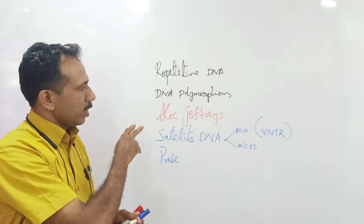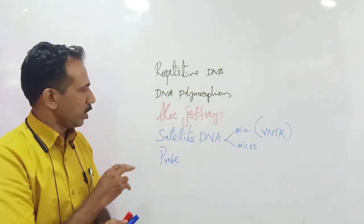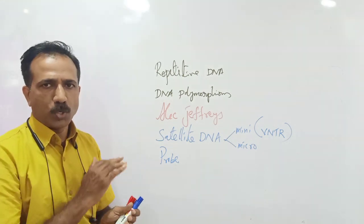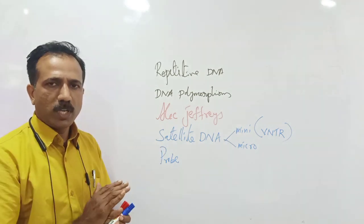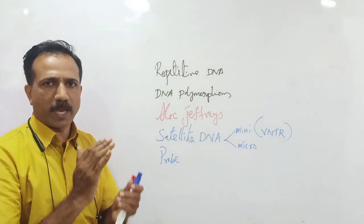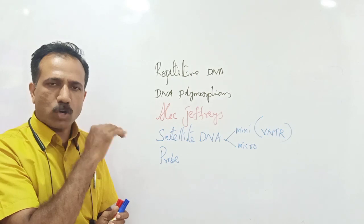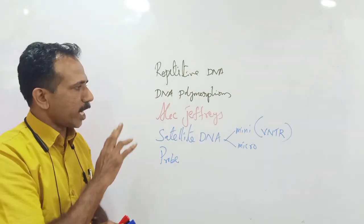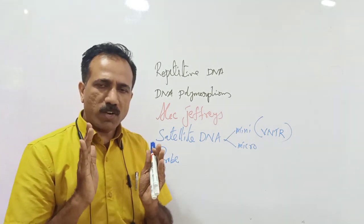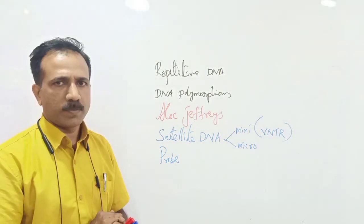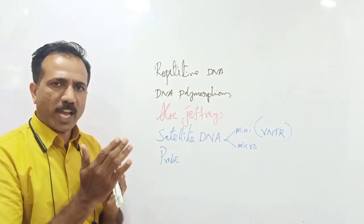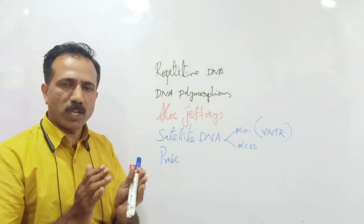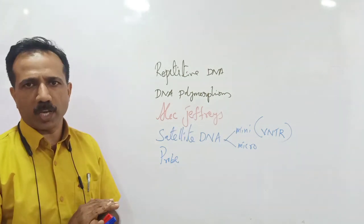The first DNA fingerprint was developed by Alec Jeffries in 1984. Satellite DNA — the repeated DNA sequences — can be separated from bulk DNA by density gradient centrifugation. Based on length, there are two types: mini satellite and micro satellite. Probes are artificially synthesized, radioactively labeled, denatured DNA fragments. The procedure involves isolation of DNA, fragmentation, gel electrophoresis, treatment with dilute alkali, blotting technique, hybridization with VNTR probes, and finally autoradiography to produce the DNA fingerprint.